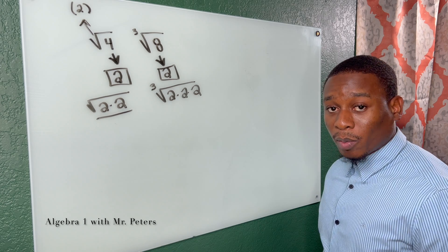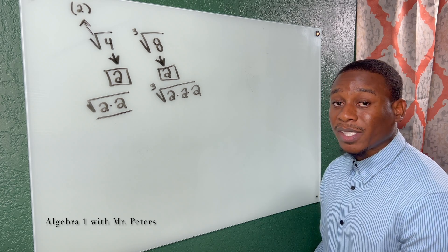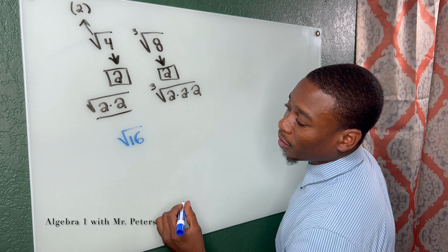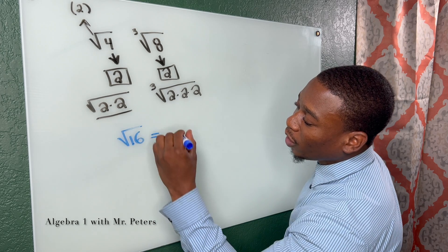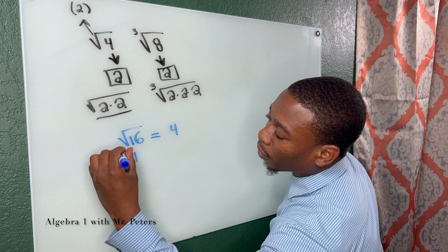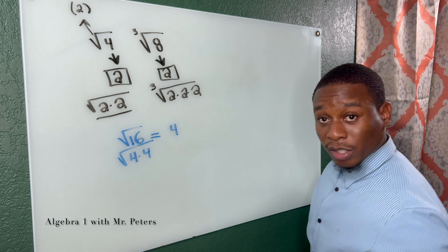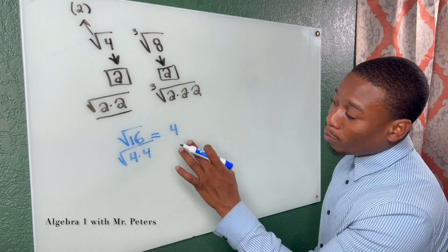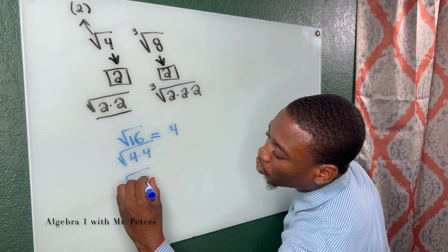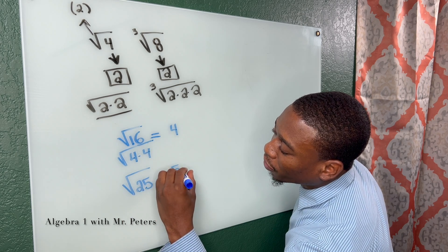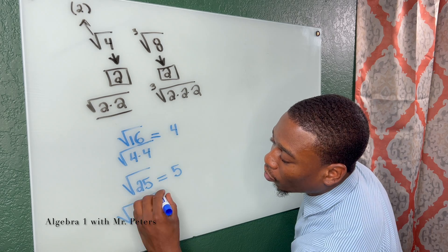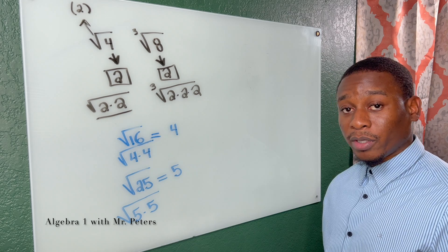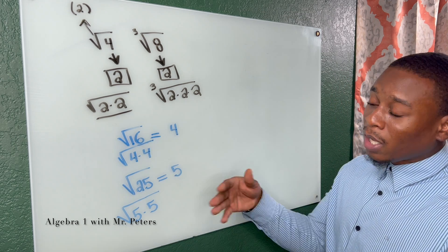Let's look at more examples. For square roots: the square root of 16 equals 4 because 4 times 4 is a pair, making it a perfect square. The square root of 25 equals 5 because under the radical we're multiplying the same number. These are examples of perfect squares.